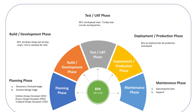The final phase is the Maintenance phase. In this stage, the RPA solution is monitored and updated as necessary to ensure continued functionality and efficiency. The Maintenance phase has two sub-stages: Execute Bots and Support. In the Execute phase, bots are executed after deployment and checked to ensure that implementation is performed as per the customer's requirements, generating meaningful results for the development team.